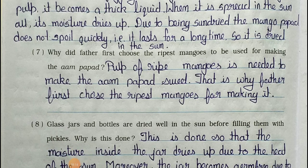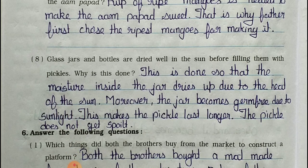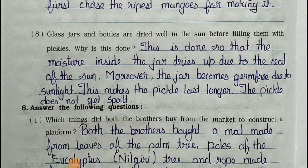Question 7: Why did father first choose the ripest mangoes for making aam papad? Answer: The pulp of ripe mangoes is needed to make the aam papad sweet, that is why father first chose the ripest mangoes for making it.